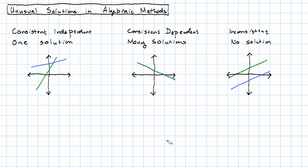So far, with algebraic methods, we've seen what happens when we solve a consistent independent system. We combine the equations to eliminate one variable, use that to find the value of the other variable, and then we plug in to find the value of the first variable.